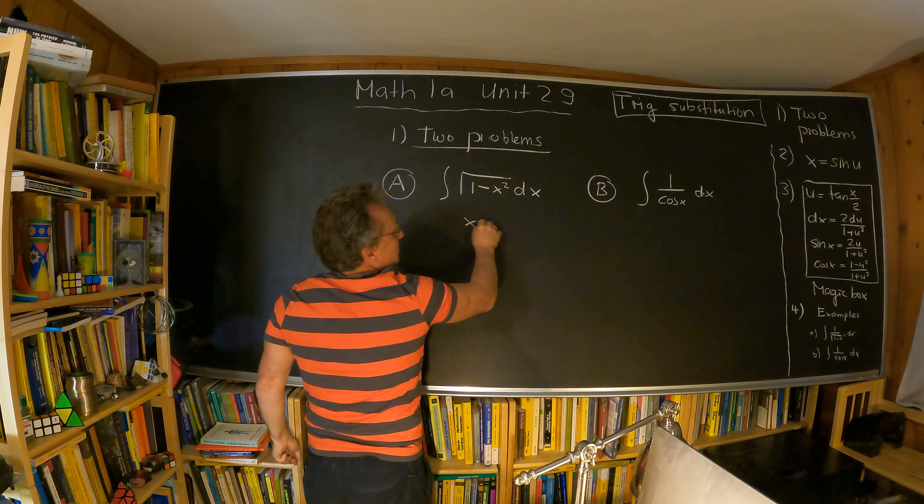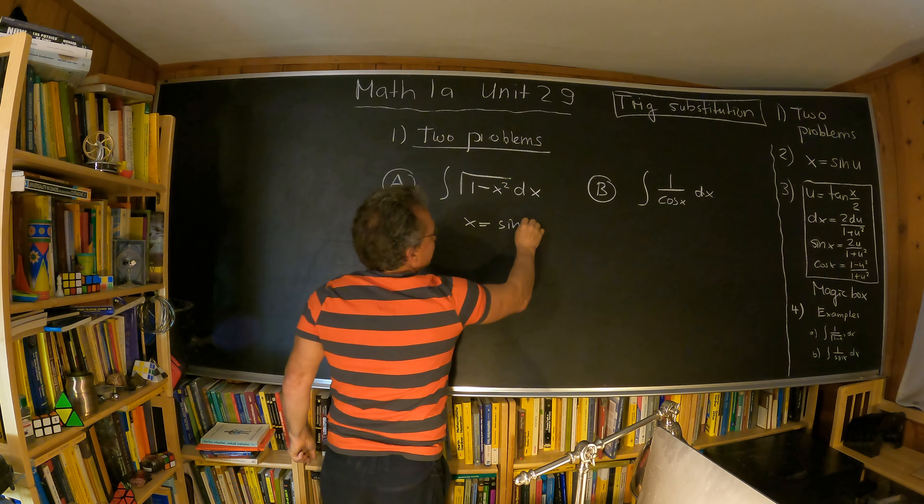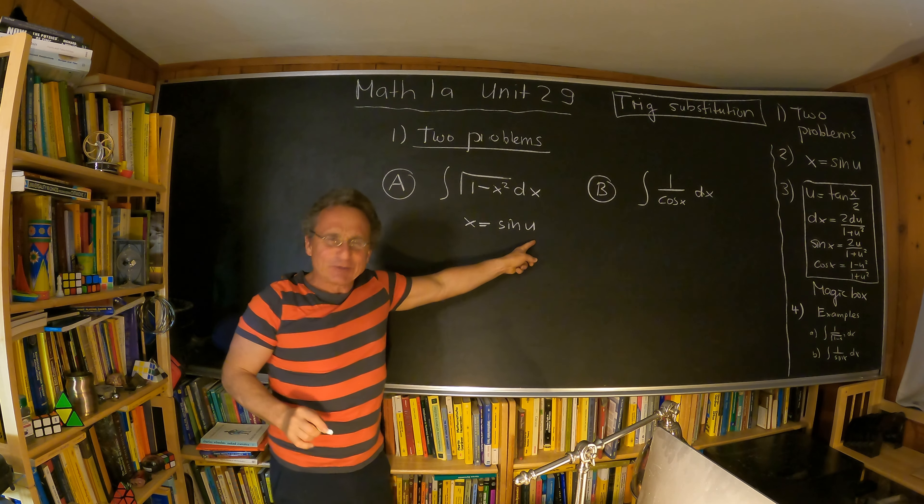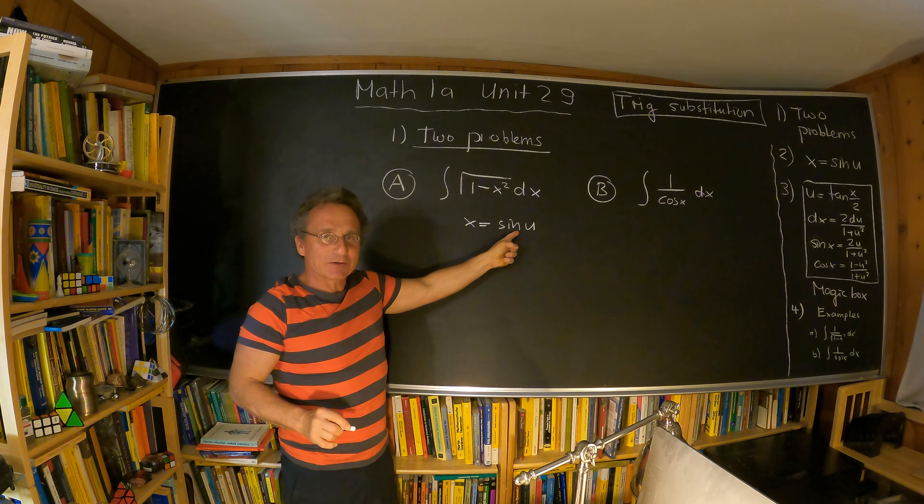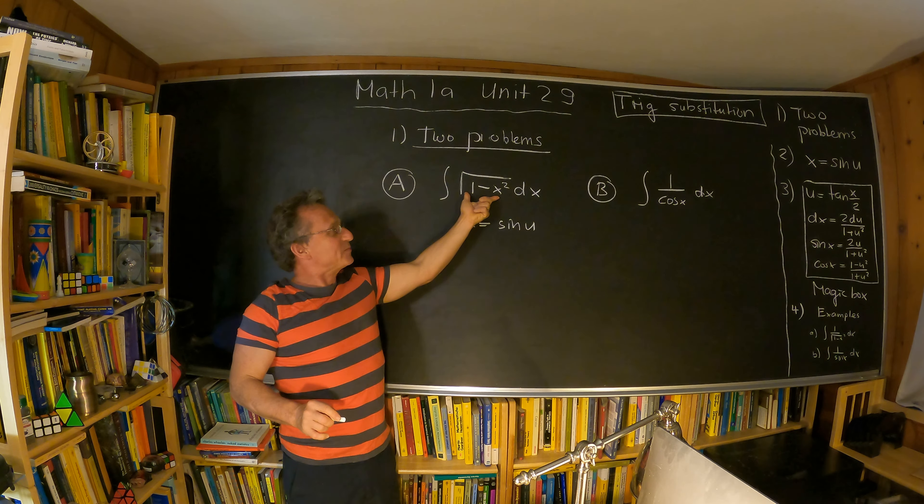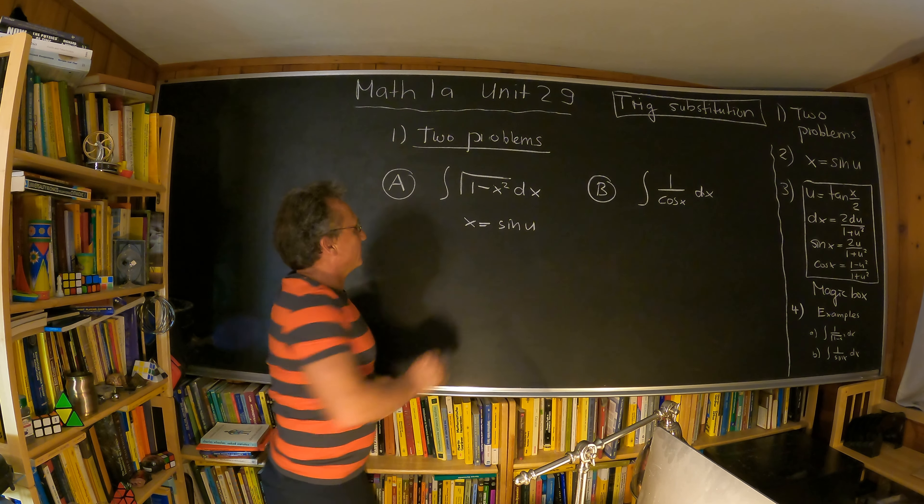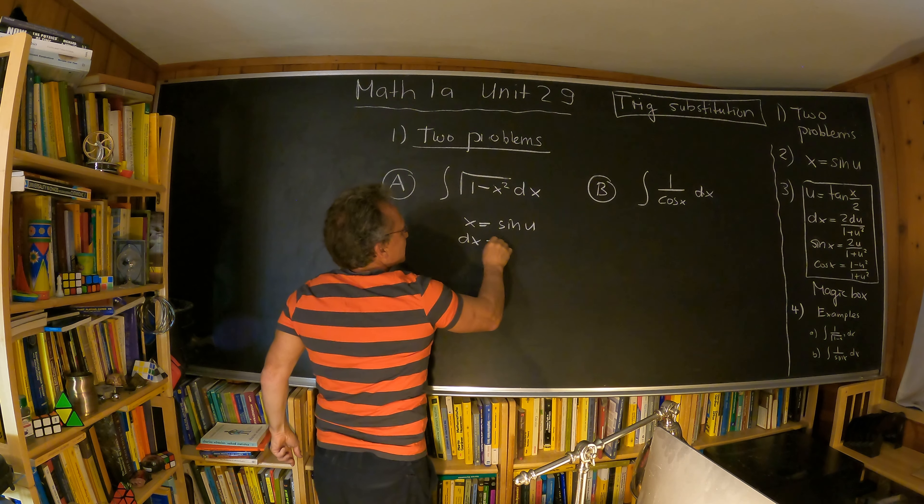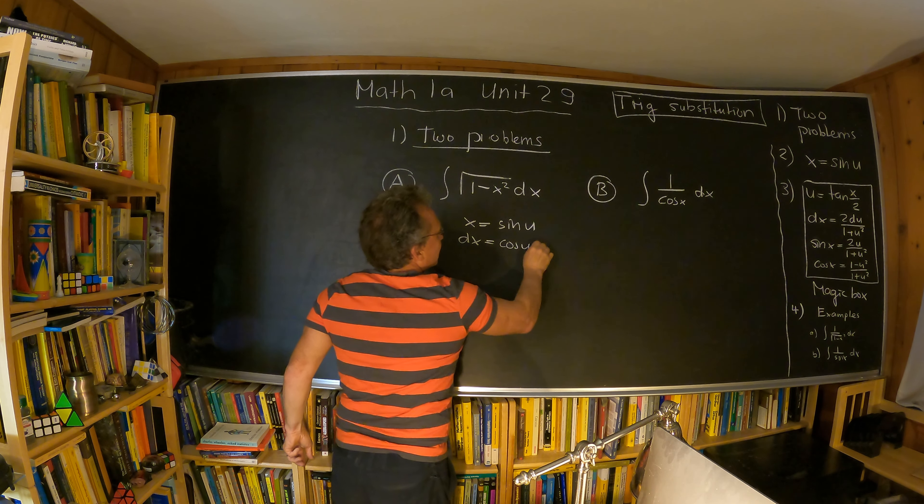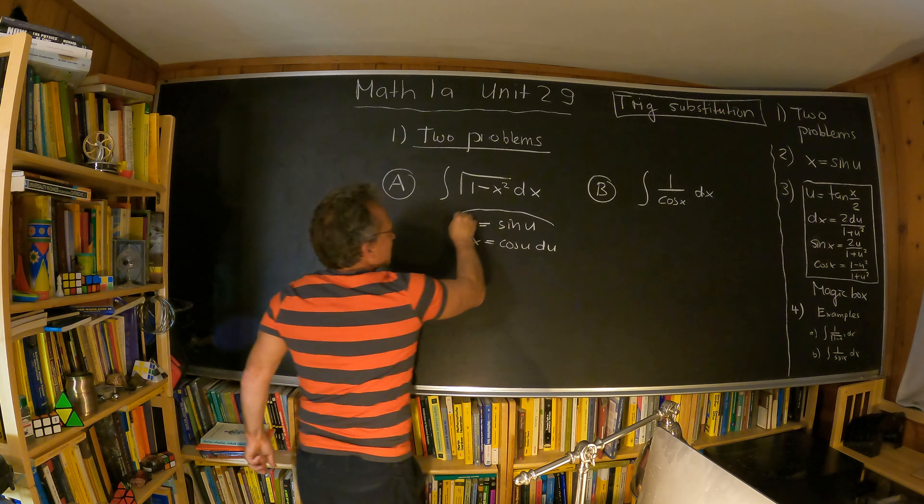We take x equals sin u. So note that we don't write u equals but we write x equals sin u. And the idea here is something which becomes simpler. This becomes then cosine u. And then the dx is just cosine u du. So that's the substitution we do.